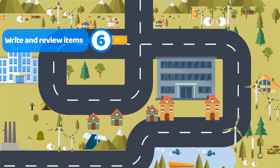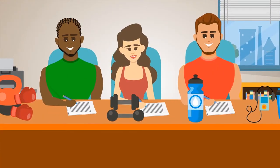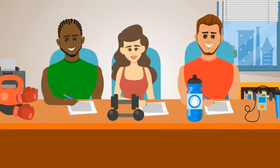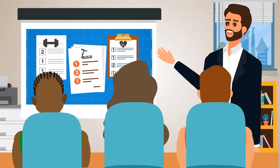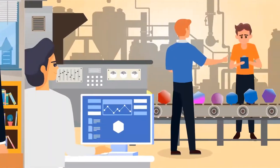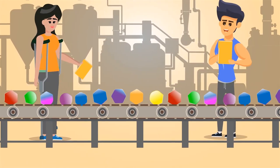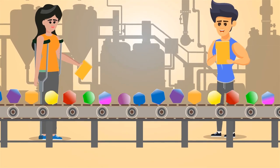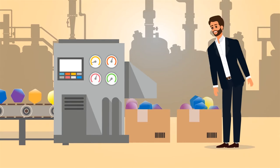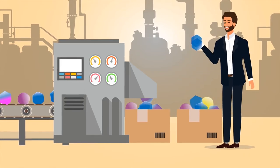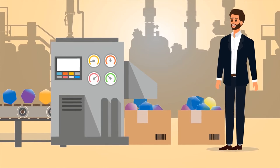Step 6: Write and review items. Physical training experts are going to write the items, and Aaron needs to train those experts to write items according to the blueprint. Each item goes through the process of being drafted, edited, and reviewed by different groups of experts. After individual items are finalized, Aaron needs to review all the items to make sure they do not duplicate each other or reveal answers to one another.